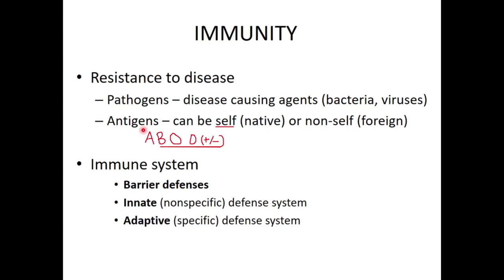Your immune system has three lines of defense. First are barrier defenses — think skin, eyelashes, sweat, hair. Second is the innate or non-specific defense system, which involves cells. Third is the adaptive immune response, involving antibodies. We're also starting to learn that T cells have memory and can provide an immune response, though it's less understood — which is why there's ongoing debate about immunity associated with coronavirus and similar viruses.